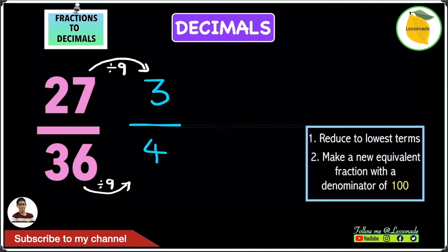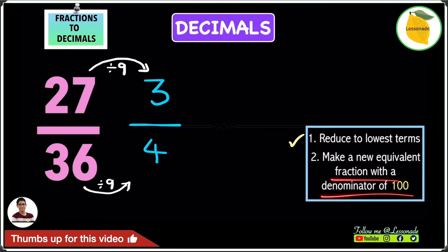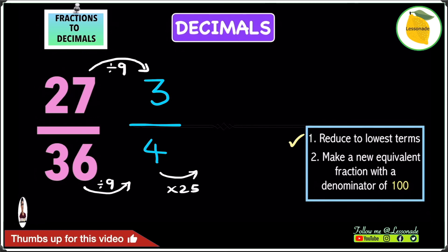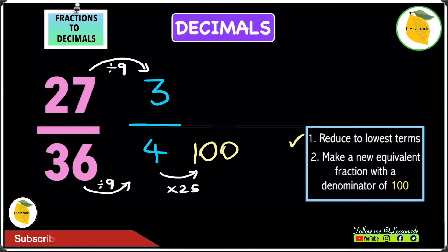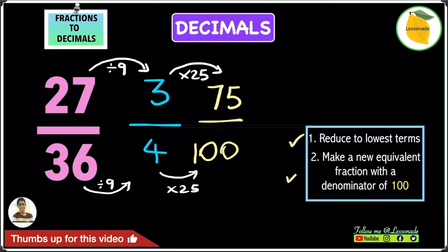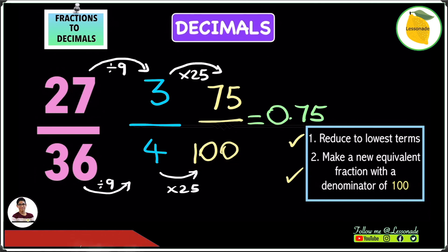Next, step number 2: make a new equivalent fraction with the denominator of 100. So we have to make this 4 into 100. To do that we multiply by 25, because 4 times 25 gives you 100. Whatever you do to the denominator you do to the numerator, so multiply the 3 also by 25. 3 times 25 gives you 75, so we get 75 over 100. And 75 over 100 as a decimal is 0.75. So 27 over 36 converted into a decimal is 0.75.